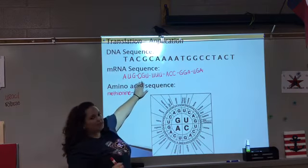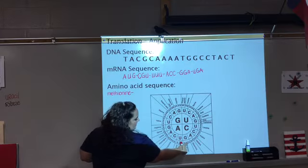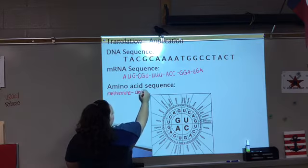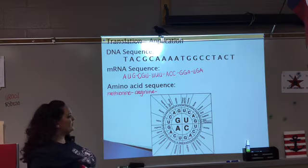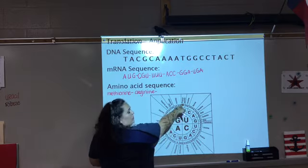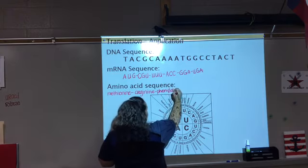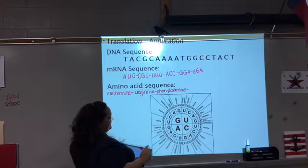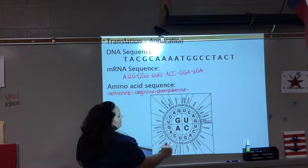The next codon is CGU. Start in the middle with C, go out to G, then out to U — that is arginine. Our next codon is UUU — that tells us we're coding for phenylalanine. Then we look at ACC: go to A, C, C — we get threonine.